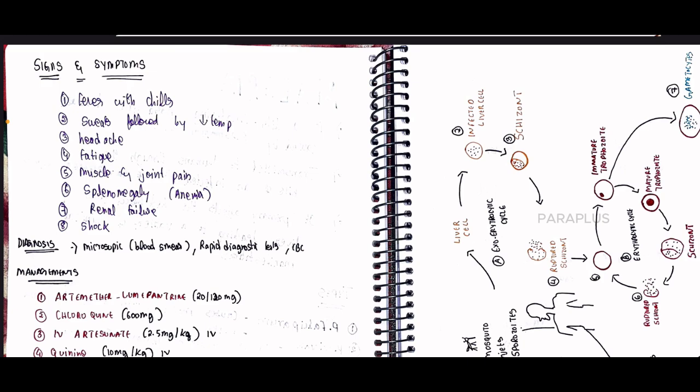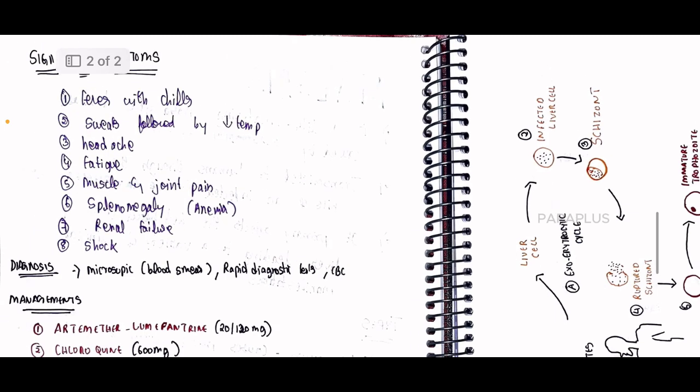Symptoms of malaria include chills, sweating followed by a decrease in temperature, headache, fatigue, muscle and joint pain, and splenomegaly — the spleen will enlarge. This ultimately causes anemia, renal failure, and shock. For diagnosis: microscopic blood smear test, rapid diagnostic test, and complete blood count.